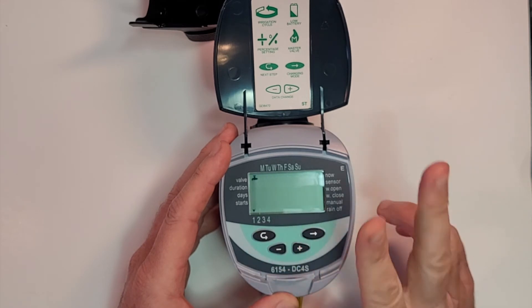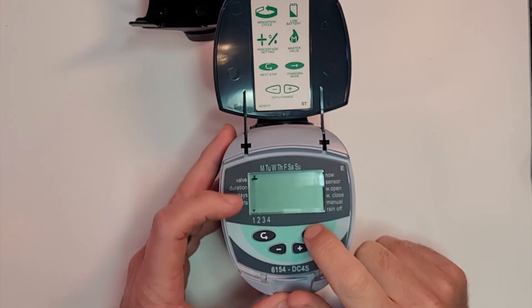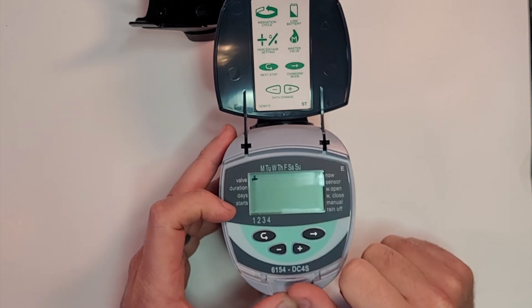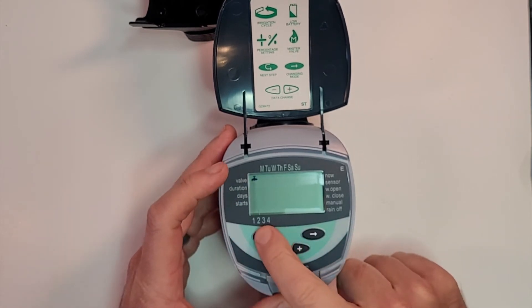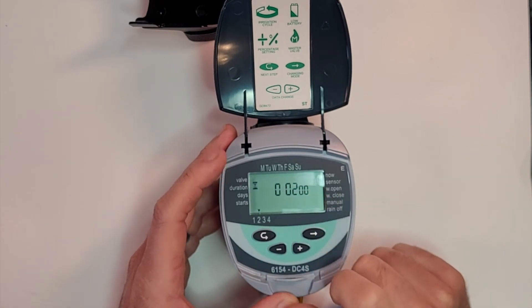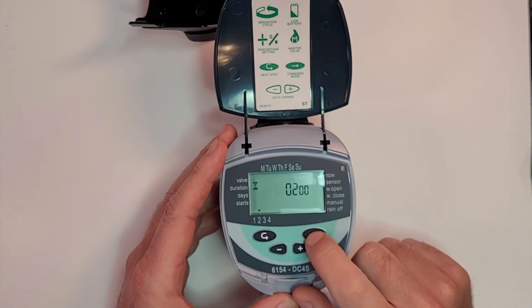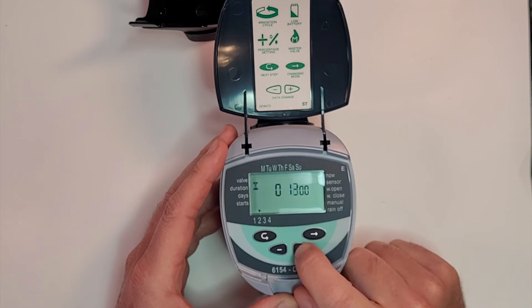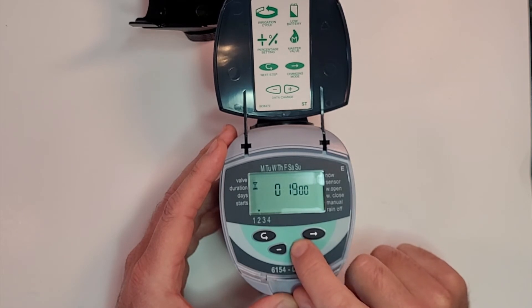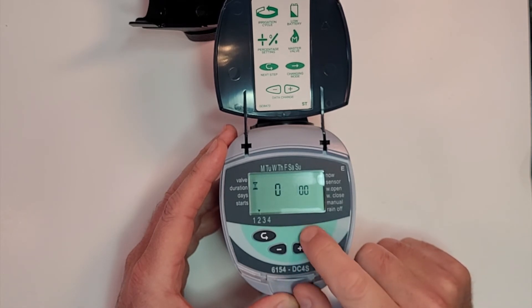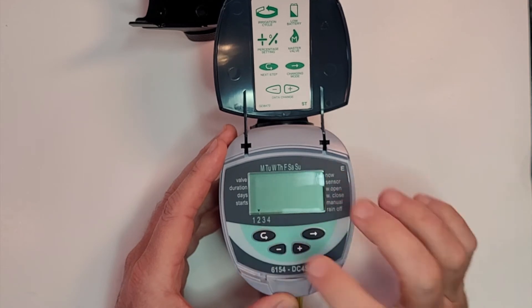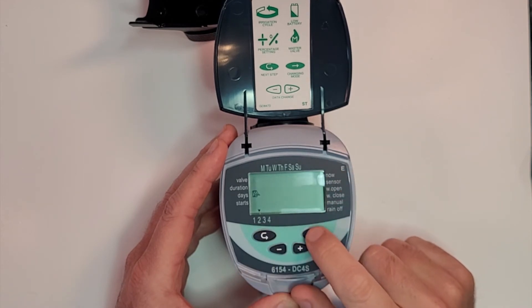Now we're going to set valve number two. We see valve number one, we're going to right arrow, hit plus. Now we're on valve number two, enter. Valve number two we are going to set for 20 minutes worth of runtime, so no hours and pluses until we hit 20 minutes. We don't need any seconds.